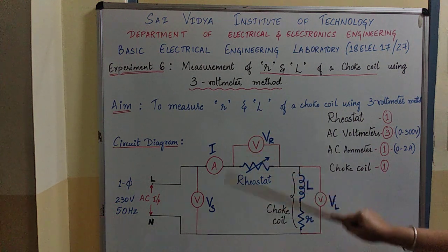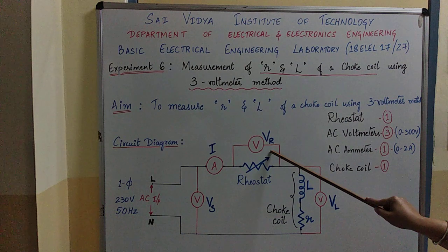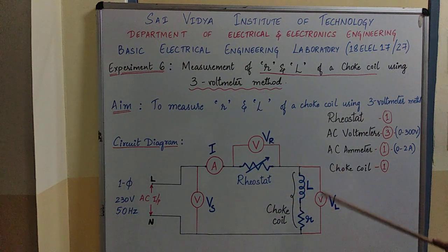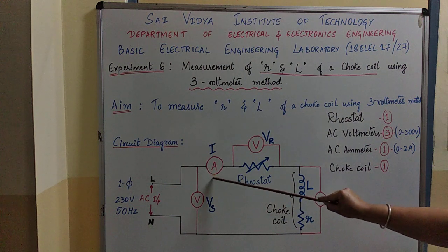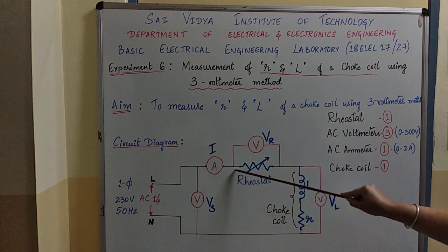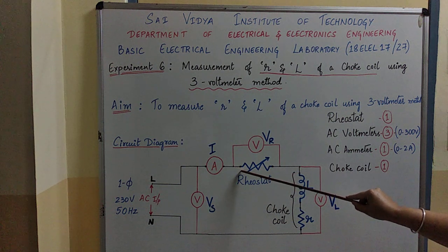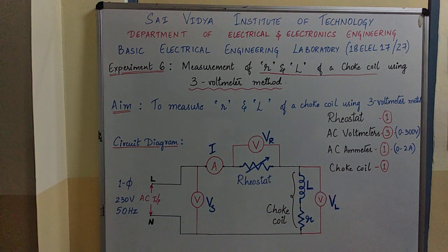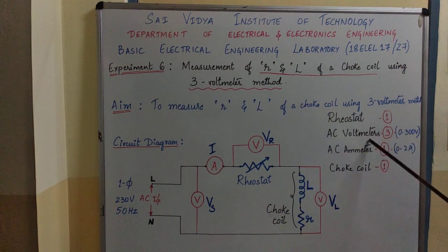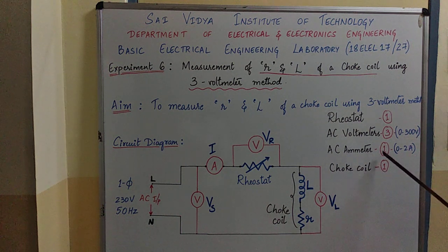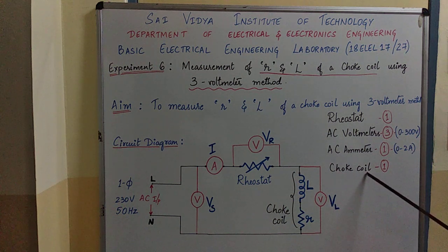One voltage is across the source Vs, one across the rheostat or variable resistor Vr, and one across the load or choke coil Vl. We are also using an AC ammeter to measure the current flowing through the circuit. We have 3 AC voltmeters in the range of 0 to 300 volts, 1 AC ammeter in the range of 0 to 2 amps, and a choke coil to complete this experiment.